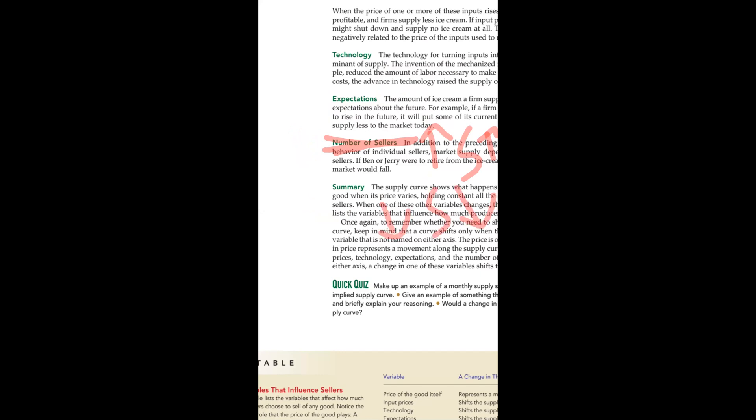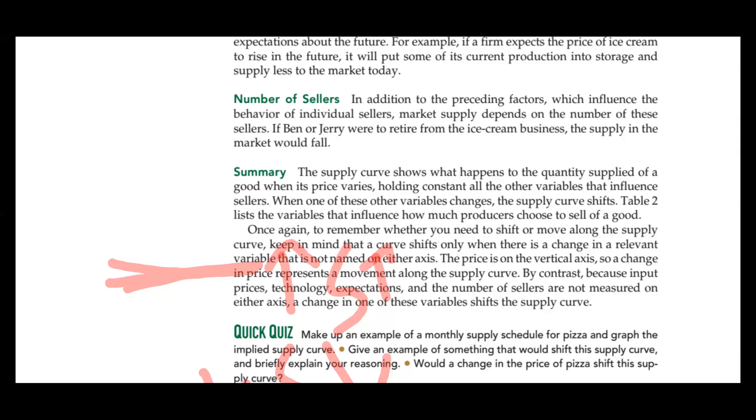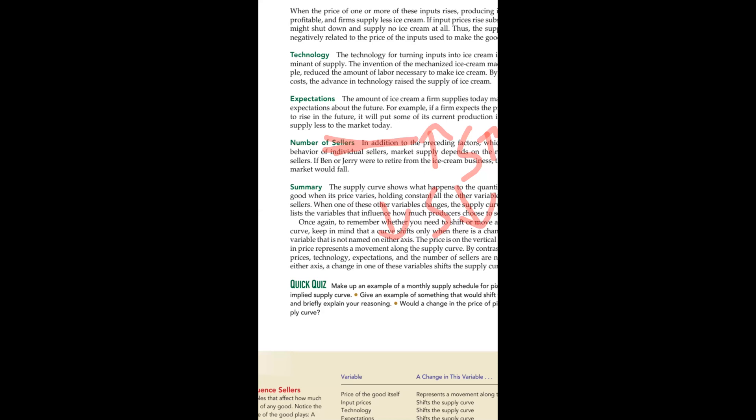For example, when you have one seller in Bangladesh and that grows to 1000 sellers per month, the total supply increases significantly. The number of suppliers directly affects how much is supplied in the market.